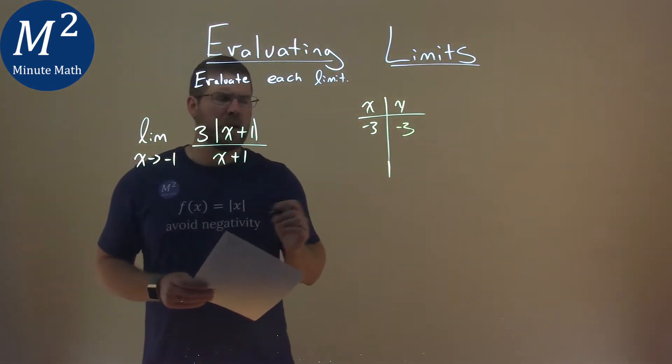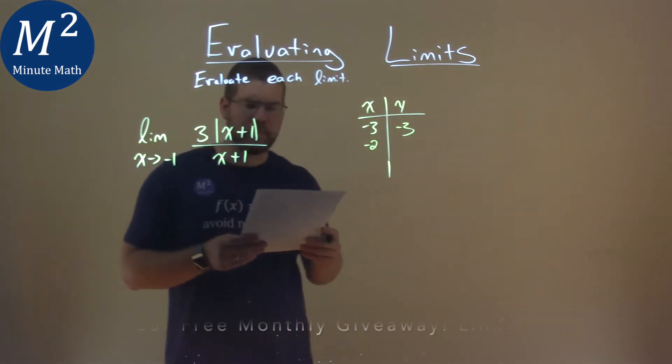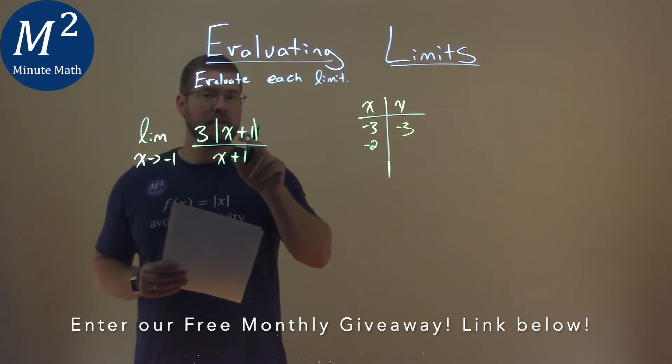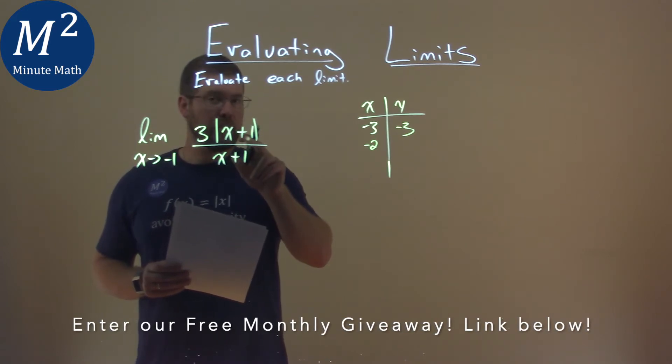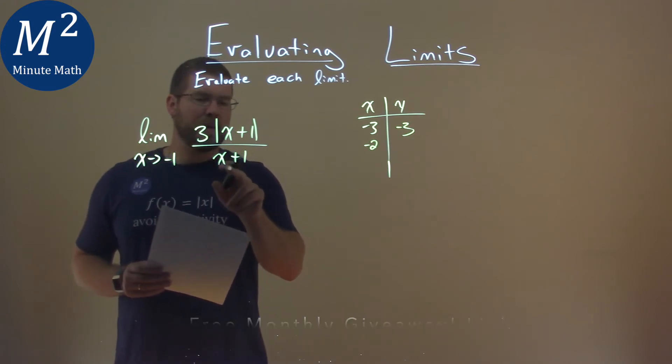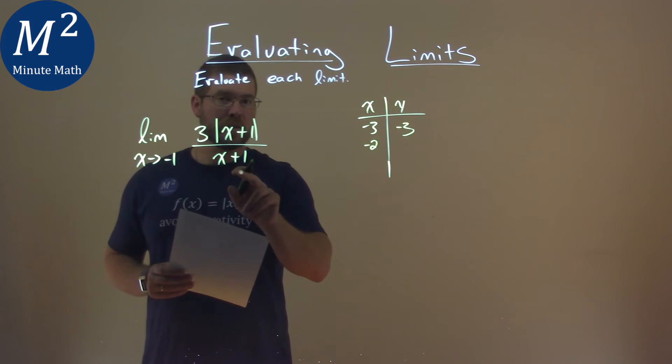Hmm. Interesting. Well, what happens if we put a negative 2 in? Let's keep going down. Negative 2 in for x. Negative 2 plus 1 is a negative 1. Make that positive with the absolute value, and we have a 3 up top. And then we have a negative 2 plus 1 is a negative 1, so 3 divided by negative 1 is a negative 3.